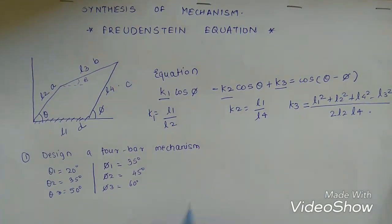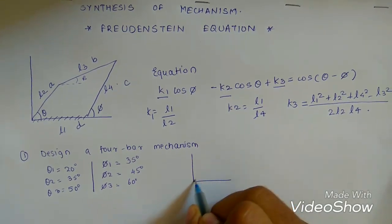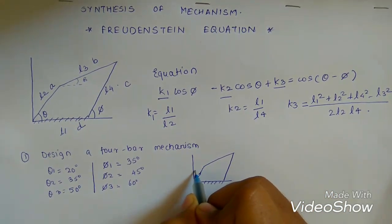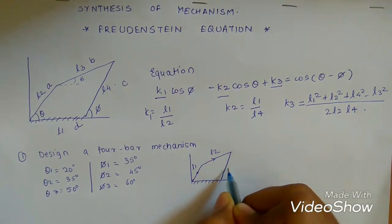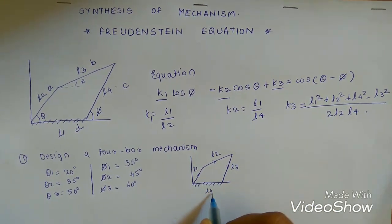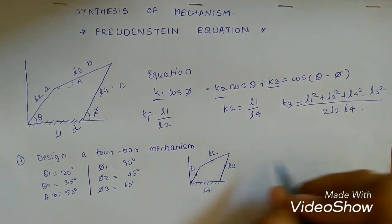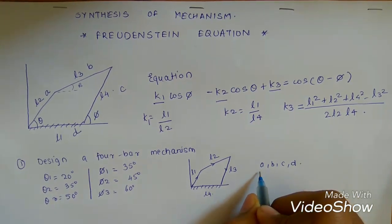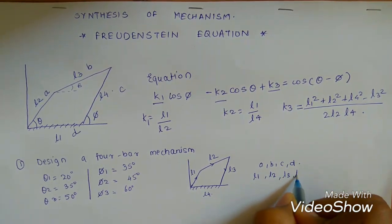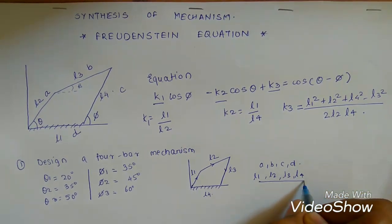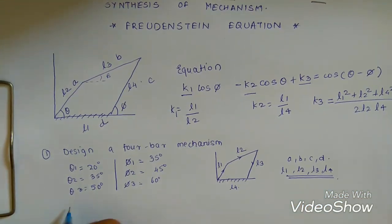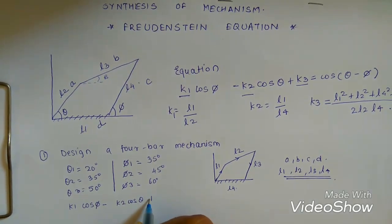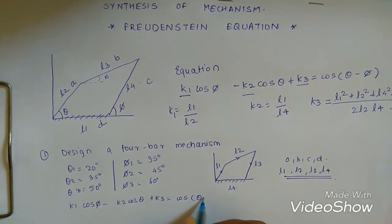Let's draw a schematic diagram of the 4-bar mechanism for reference. As stated earlier, we consider the input link as L1, the coupler link as L2, this will be L3, and the fixed link will be L4. In the exam, if you are given the notation for the links as A, B, C, and D, convert them to L1, L2, L3, and L4 as all our formulas are in this format. The first step: write down the equation k1·cos(phi) − k2·cos(theta) + k3 = cos(theta − phi).